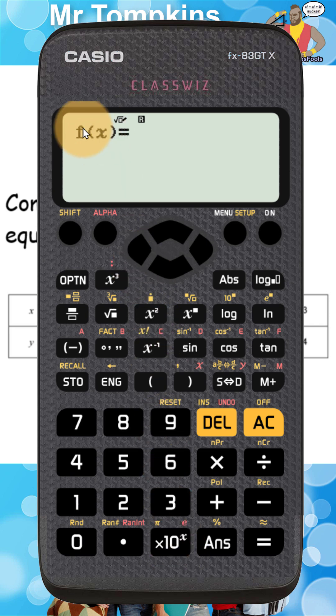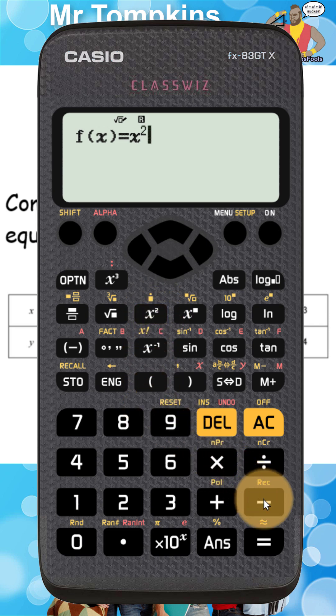On your screen it should now say f of x is equal to and we're going to type in the function. I'm going to press the alpha key first and then the x key. Then I'm going to use the x squared button and then the minus key and then I need another x and then I'm going to subtract 2.